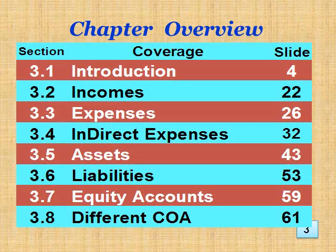Chapter Overview: 3.1 Introduction is on slide 4. 3.2 Incomes is on slide 22. 3.3 Expenses is on slide 26. 3.4 Indirect Expenses is on slide 32. 3.5 Assets is on slide 43. 3.6 Liabilities is on slide 53. 3.7 Equity Accounts is on slide 59. 3.8 Different Chart of Accounts is on slide 61.